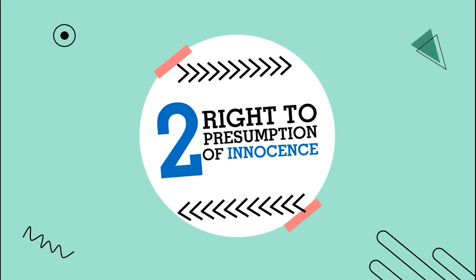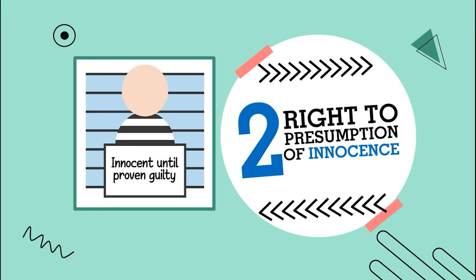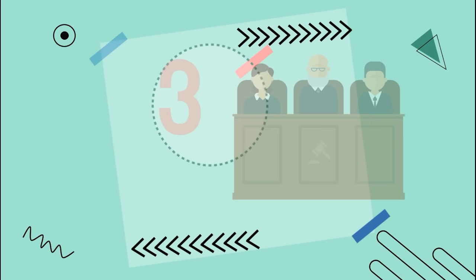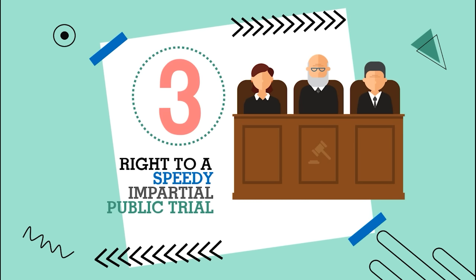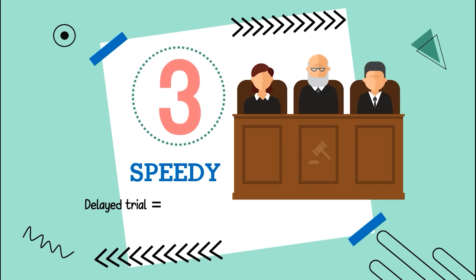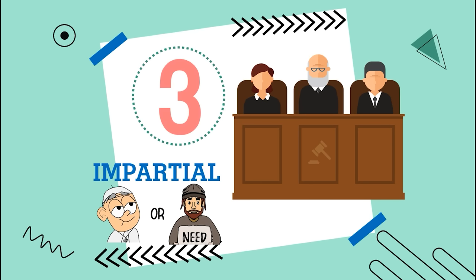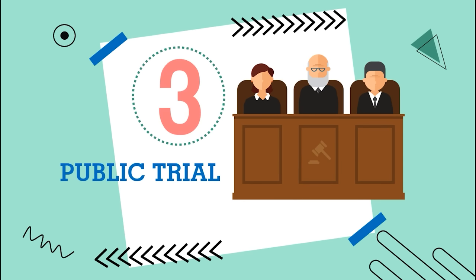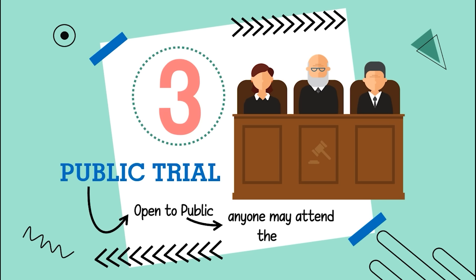Next, the right to presumption of innocence — the accused will be innocent until proven guilty. Third, the right to a speedy, impartial, and public trial. Speedy means the court should not delay the trial, as it would prolong the agony of the accused. Impartial means whether the accused is the pope or a homeless person, the judicial system must be fair. A public trial is a trial open to the public — the accused's friends, relatives, and others interested in observing the proceedings may attend.